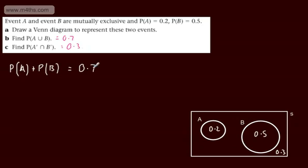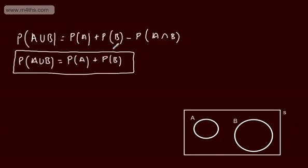As you can see, mutually exclusive events are fairly straightforward to deal with. We've just got to appreciate, using the addition rule, that they have no intersection, leaving us with this basic result here.